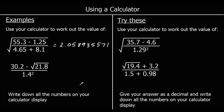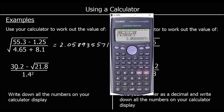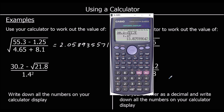For the second one, we've got a fraction, so press the fraction button first. On the top line we've got 30.2 minus the square root — press the square root button — of 21.8. Then click to the bottom line: 1.4 squared, so press 1.4 then the squared button. The question looks the same as the calculator display — just press equals. So 13.02599642.